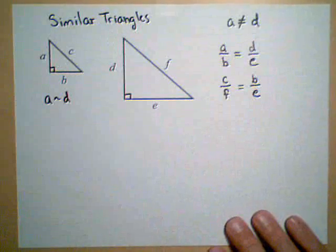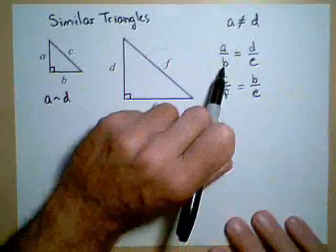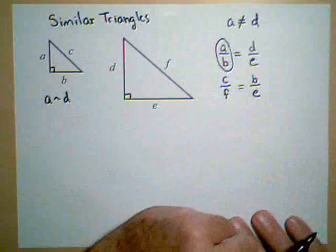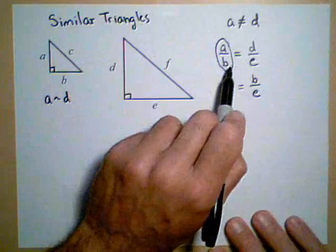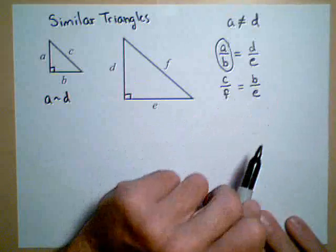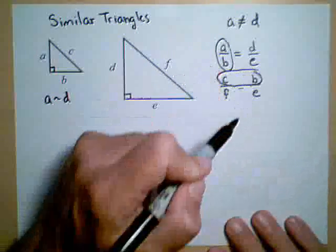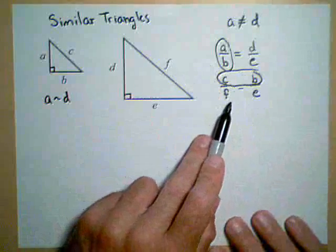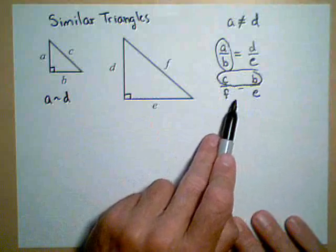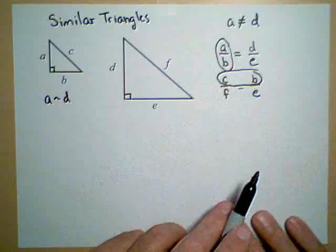Now, here's what's important when you're setting these up. Notice that A over B is part of the same triangle. They're both part of the little triangle and they're on the same side. D and E are part of the big triangle and they're on the same side. Setting them up this way, notice that C and B are part of the little triangle, and F and E are part of the big triangle. So they have to be matched up horizontally. You either have to match them up vertically or horizontally as part of the same triangle.